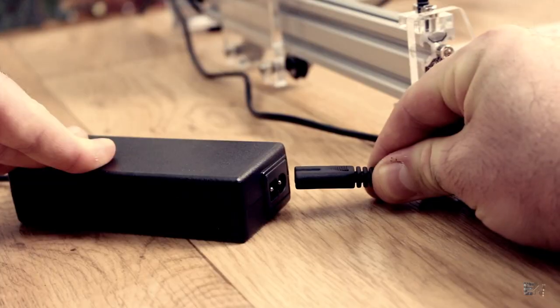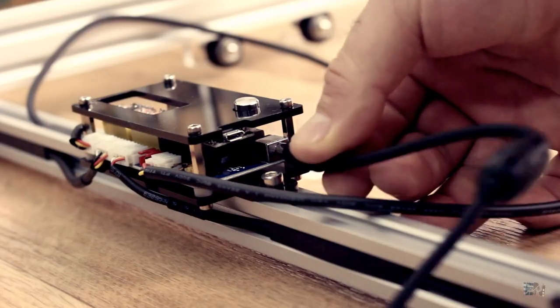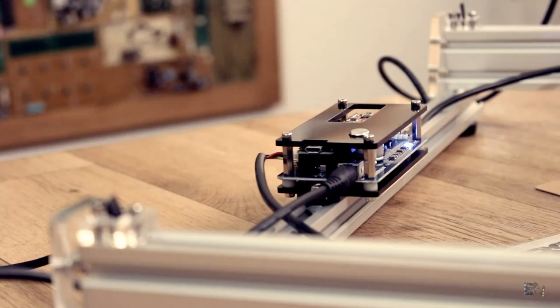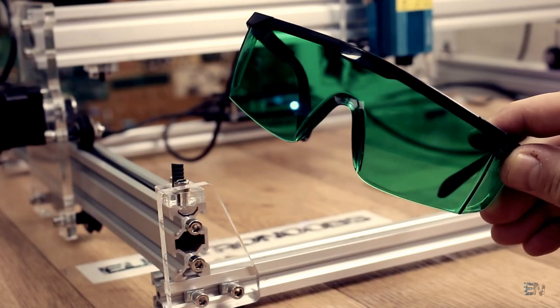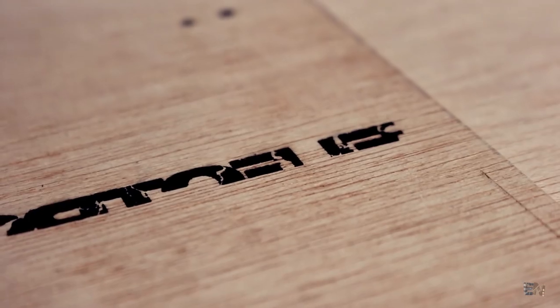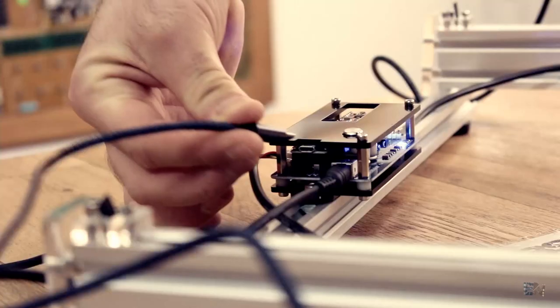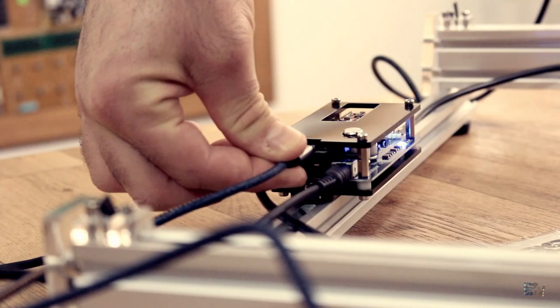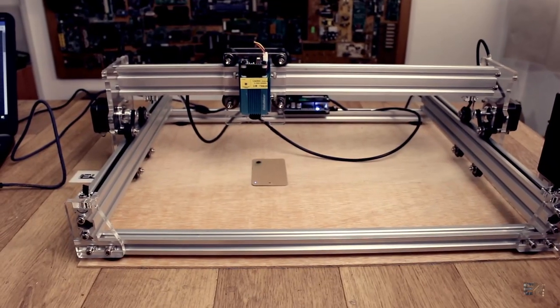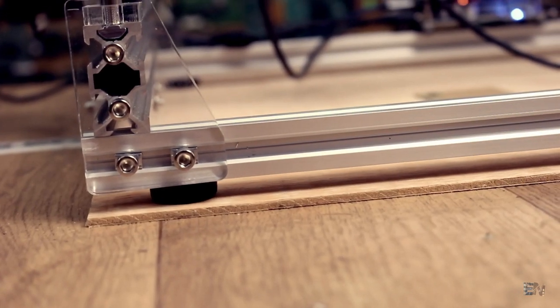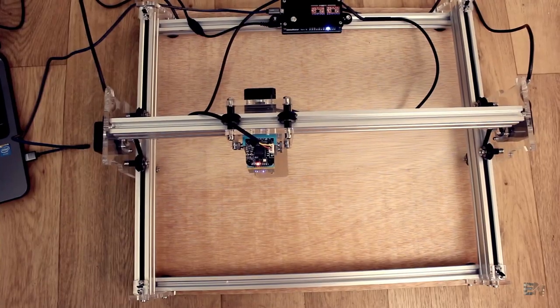I plug the adapter and connect the 12 volts to the main board. Now everything is powered. It's time to put the safety glasses because this machine is quite dangerous. Connect the USB to the board and then to your PC. In order to protect my workshop table, I've placed a sheet of plywood beneath the machine.